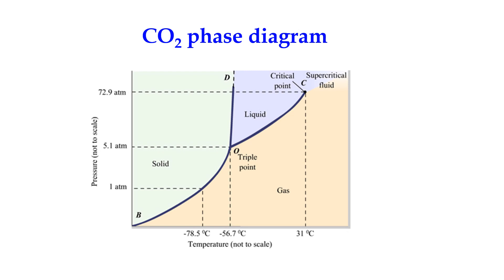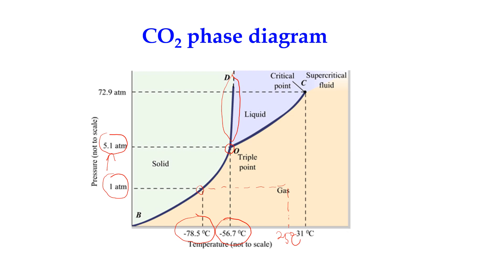For the CO2 phase diagram, it is almost similar to the water phase diagram, but the slope between solid and liquid is a positive slope, slightly tilted to the right. At standard pressure of 1 atm, solid CO2 can only transform to gas by sublimation. When we increase the pressure to the triple point value, CO2 can have solid, liquid, and gas phases coexisting at equilibrium at that temperature. At standard pressure, solid CO2 transforms to gas at −78°C, which is below the triple point.